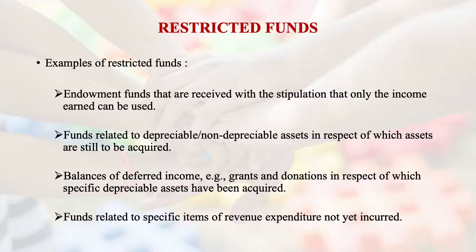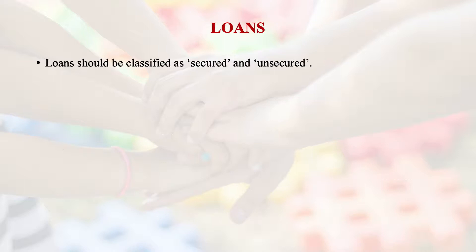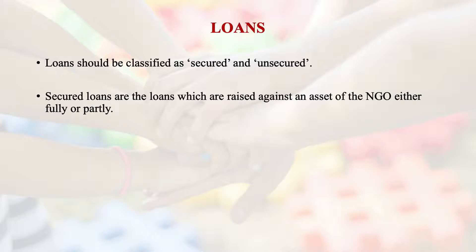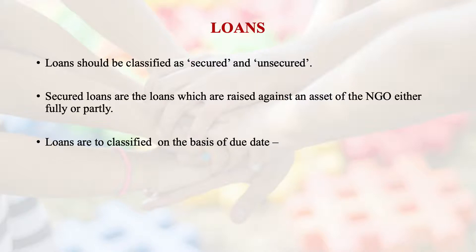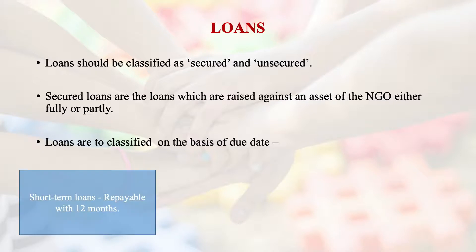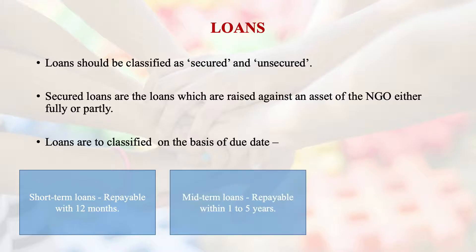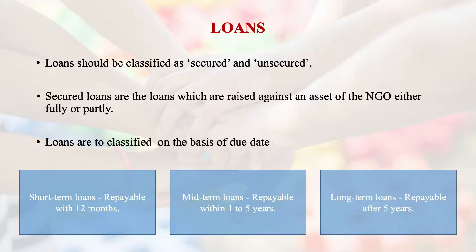The third type of capital fund is loans, which should be classified under secured and unsecured nature. Secured loans are raised against an asset of the NGO, either fully or partially. Loans are also classified on the basis of due dates: a short-term loan is repaid within 12 months, a mid-term loan within one to five years, and a long-term loan is repaid after five years.